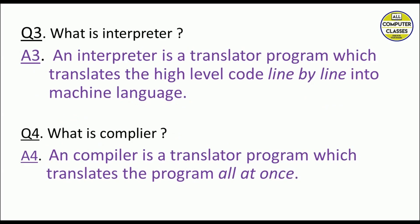What is an interpreter? An interpreter is a translator program which translates high-level code into machine language line by line. A compiler also translates a program, but it translates the entire program all at once — this is the only difference between the two. Otherwise, the purpose of both the interpreter and the compiler is the same: to convert high-level code into machine-level language that the computer can understand.